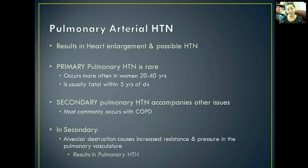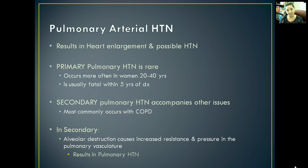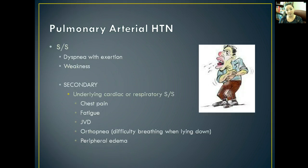Eventually you'll notice enlargement in the heart and possibly systemic hypertension as well. Primary pulmonary hypertension is rare; it usually occurs more often in women who are 20 to 40 years old and is usually fatal within five years of diagnosis. Secondary pulmonary hypertension usually comes alongside another issue, often COPD. In secondary pulmonary hypertension, the alveoli are destroyed, causing increased resistance and pressure in the vasculature supplying oxygenation to the lungs, which eventually leads to pulmonary hypertension.